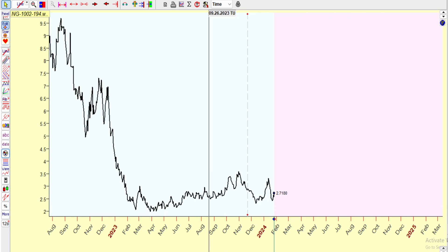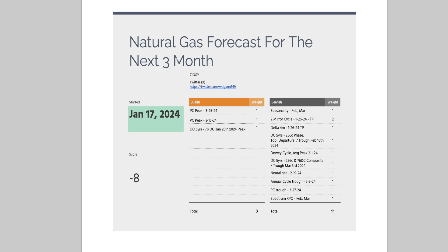I wanted to show you two more things and then we're done. This is my natural gas forecast for the next three months. As you can see, these are the bullish projection line cycles predicting the future using probability — not that it's written in stone, only God could do that. This is the bullish scenario I have in regards to cycles, and these peak around 3.25. So this is bullish, meaning it's going up to March.